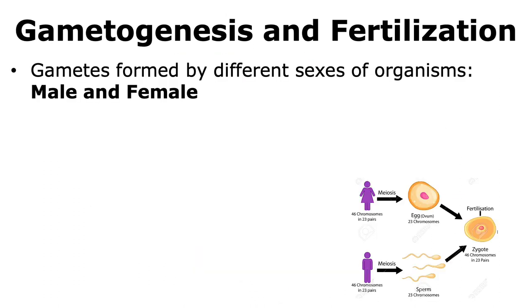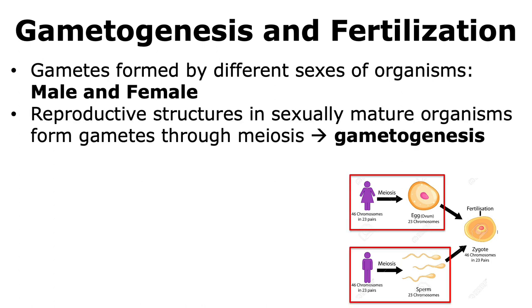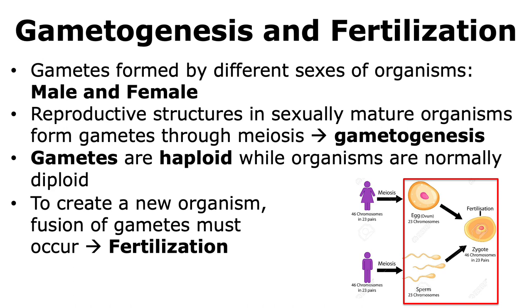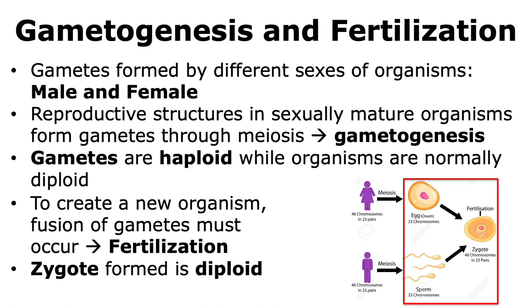The first process we're going to look at is gametogenesis. Gametes are formed by the different sexes of organisms — males and females. The reproductive structures in sexually mature organisms form gametes through the cell division process of meiosis, and this entire process of forming gametes is called gametogenesis. Females produce the female gametes, which are eggs, whereas males produce the male gametes, which are sperms. In both cases, the gametes are haploid because of meiosis. To create a new organism, fusion of gametes must occur — this process is called fertilization — forming a diploid zygote.